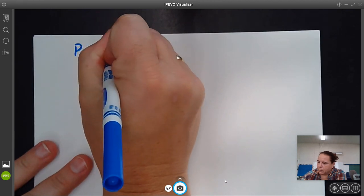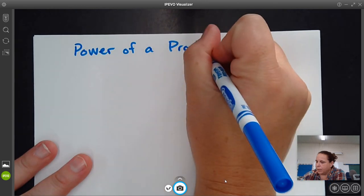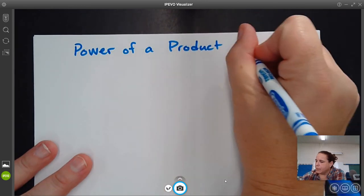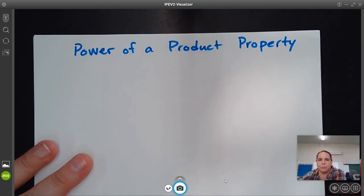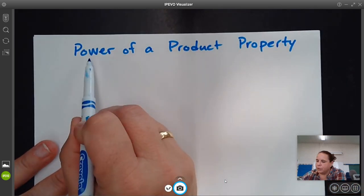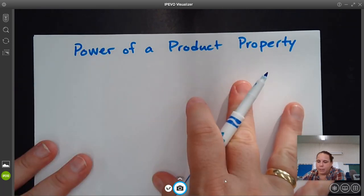Power of a product property. I don't think this one, it is useful sometimes for simplifying an expression, but you could get by without remembering this one.